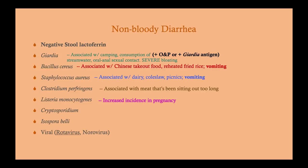Listeria monocytogenes causes listeriosis — another foodborne illness that tends to appear in outbreaks with recalls of products like lettuce or cereal. Listeria is not very common, but there's an increased incidence in pregnancy, probably because pregnant women's immune systems drop a little to support the fetus. ACOG says treat pregnant women with listeriosis the same way you would treat anyone else with listeriosis.